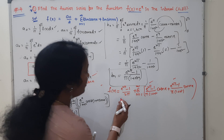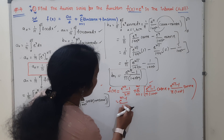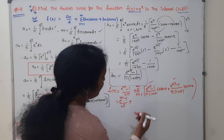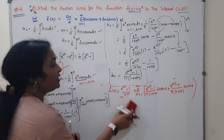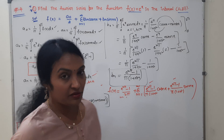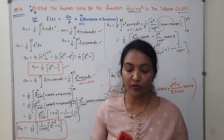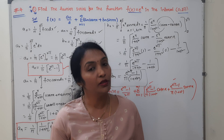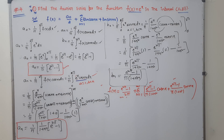Taking (e^(2π)−1) as a common factor, we can write the final Fourier series compactly. This is our solution. In the next video we will do a different type of problem. All the best, thanks for watching.